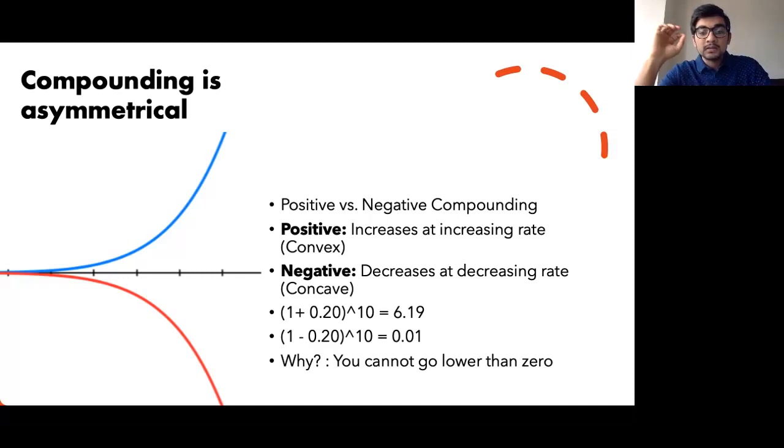So keep in mind this asymmetric nature of compounding, which is that when you go up, when it's positive compounding, there's no limit, but if you have negative compounding, the limit is zero.